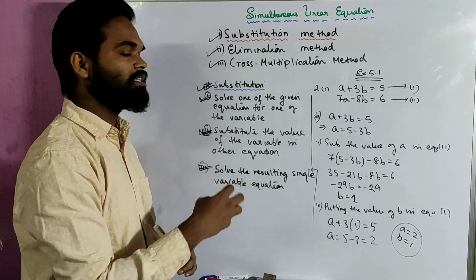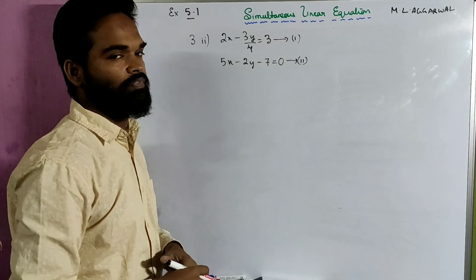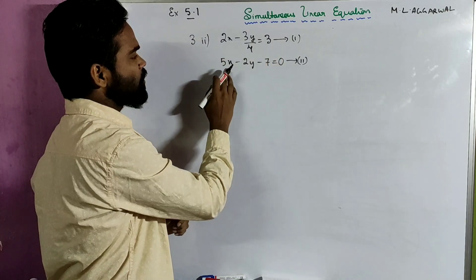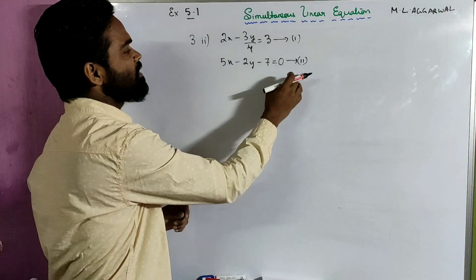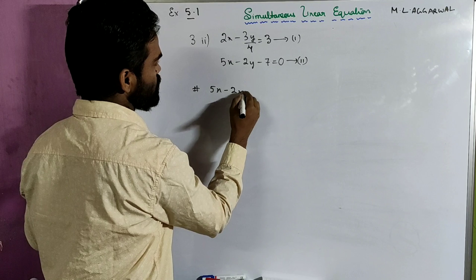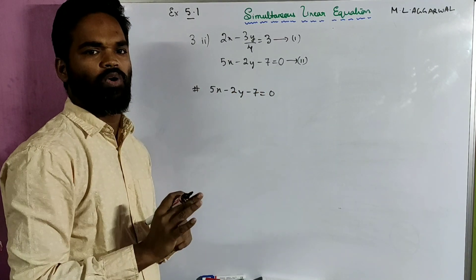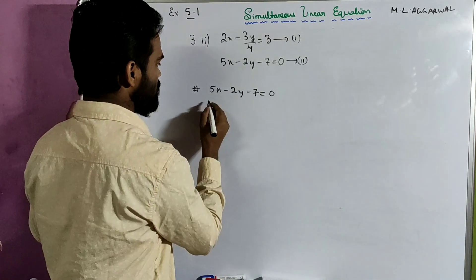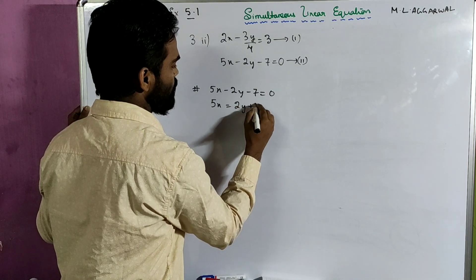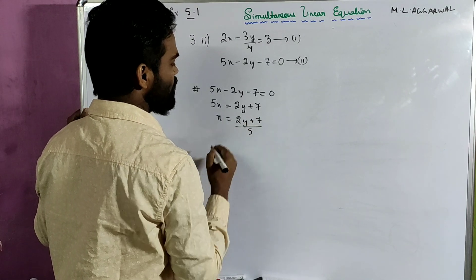Now we'll look at a few more sums. Look at sum number 3, part 2: solve these pairs of simultaneous linear equations. 2x minus 3y divided by 4 equals to 3 — that's the first equation. 5x minus 2y minus 7 equals to 0 — that's the second equation. I'll take the second equation and make x the subject. So from 5x minus 2y minus 7 equals to 0, I can write 5x equals to 2y plus 7, which means x equals to (2y plus 7) divided by 5.